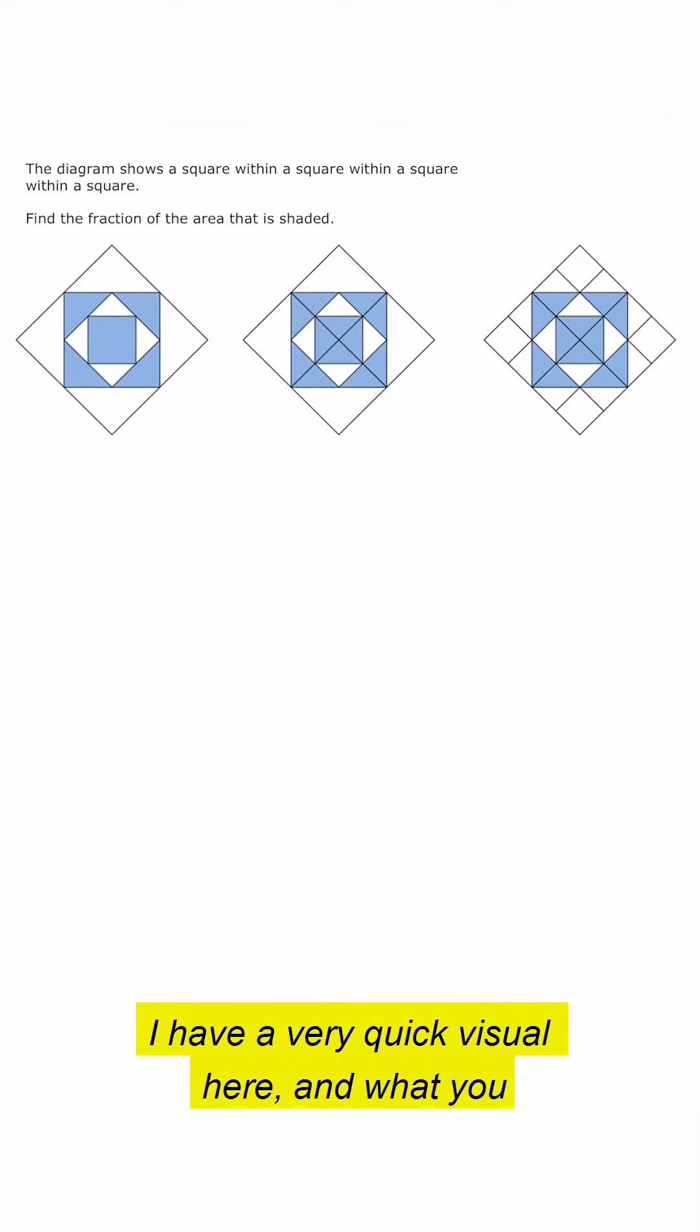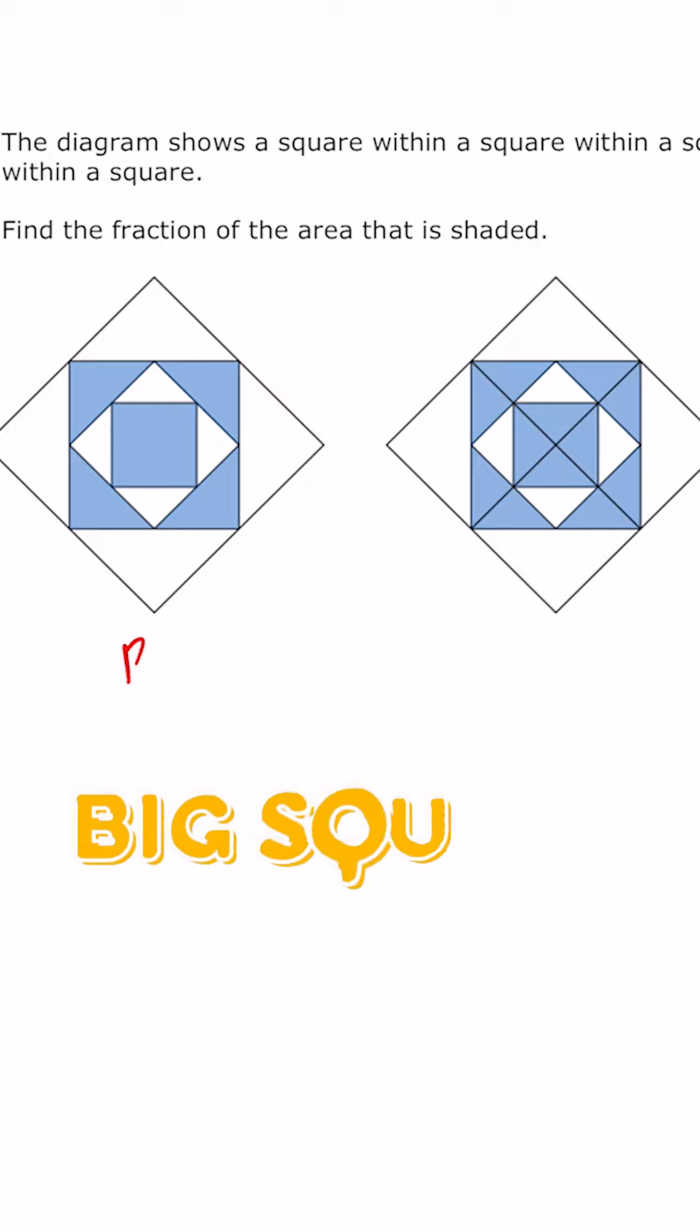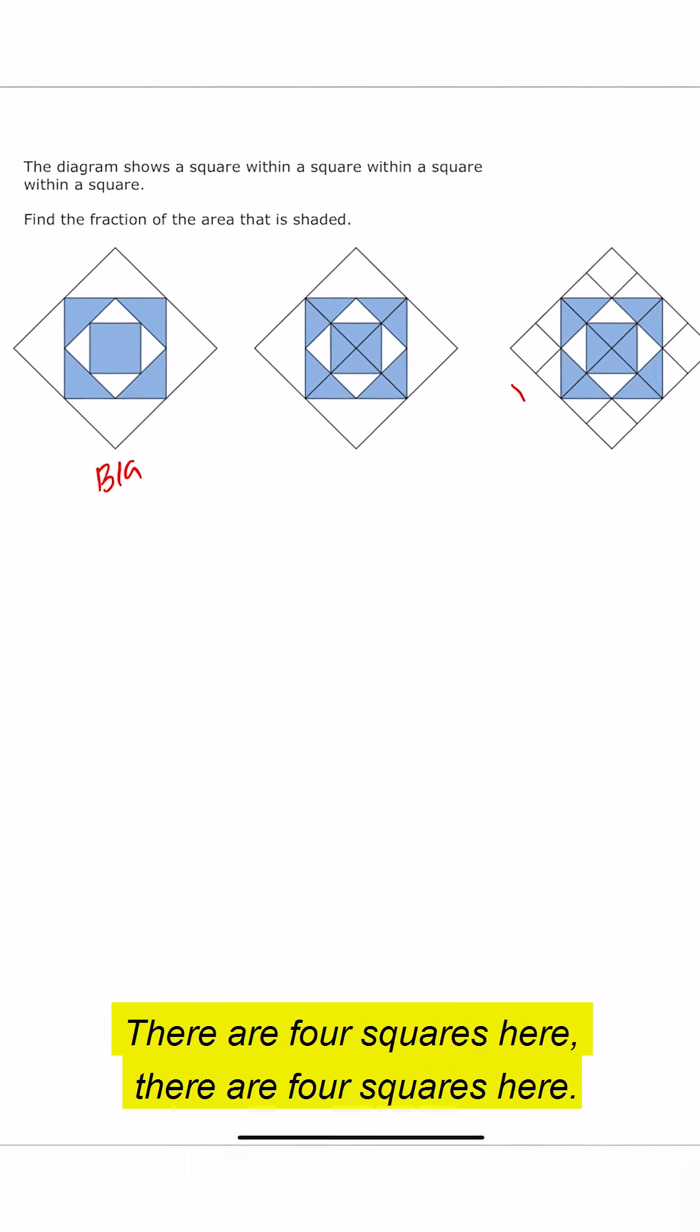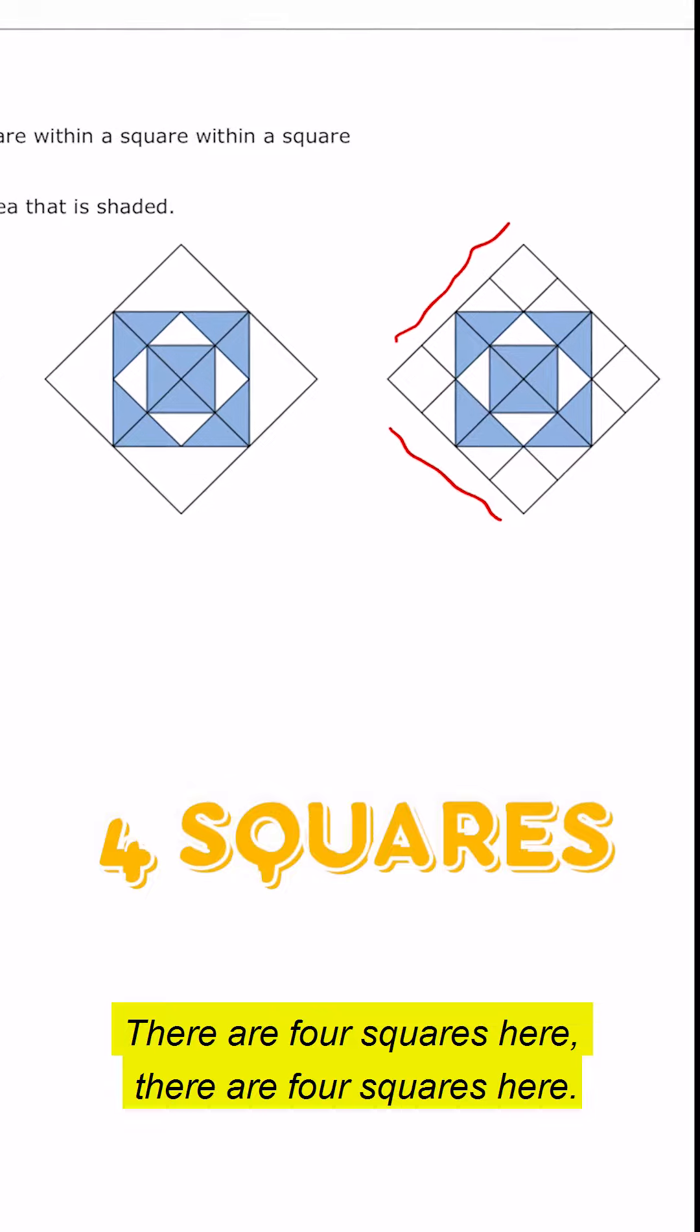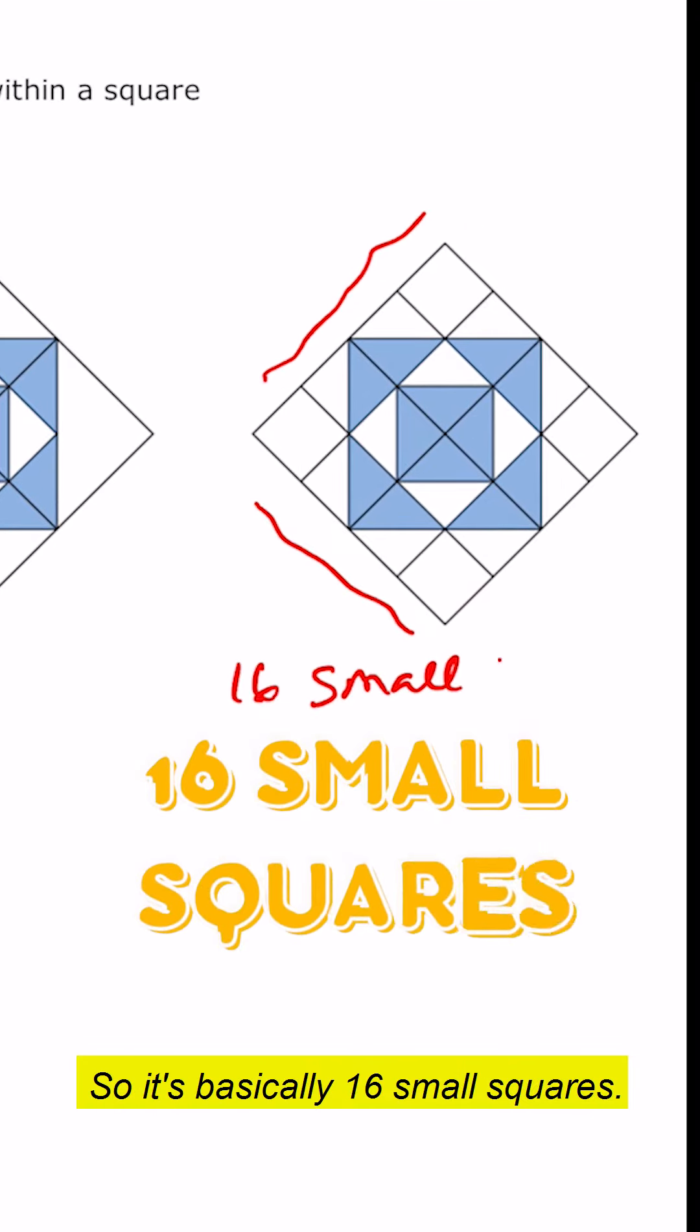I have a very quick visual here. What you will notice quickly is that this big square is actually made of four squares here and four squares here, so it's basically 16 small squares.